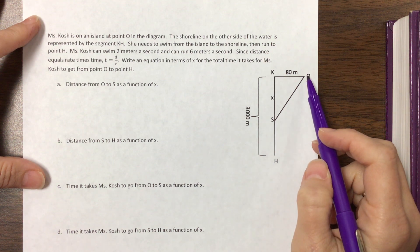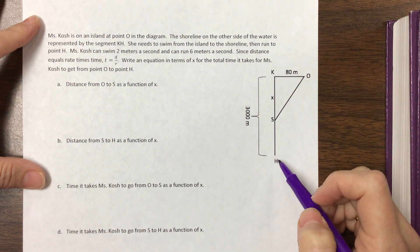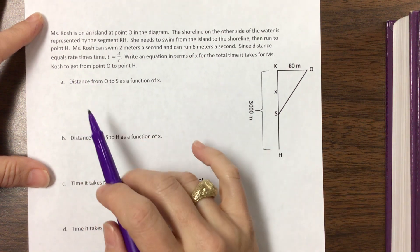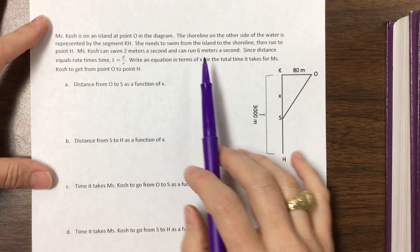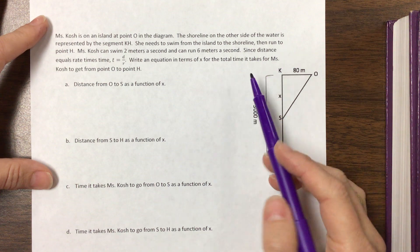I have to swim somehow to the other side and then run to get to point H. So then they made up some numbers that I can swim two meters a second and run six meters a second. I don't even know if that's good but if it's good it's a lie.